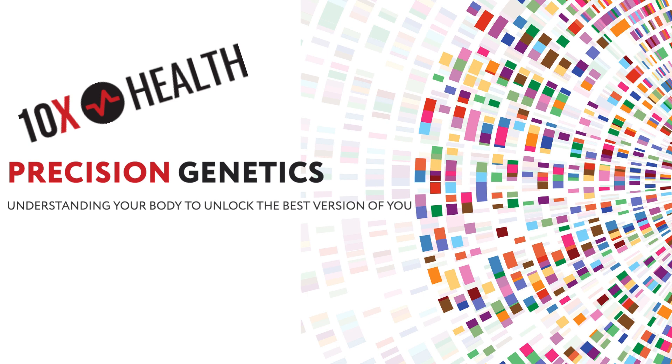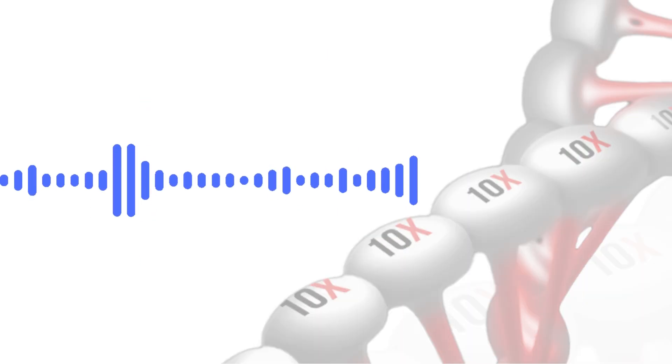So before we even jump into that, one of the sources we had said that 44% of the world population has a mutation in a gene that affects how our body uses nutrients. That's wild, isn't it? It's almost half. It really highlights the potential impact of understanding your genes.